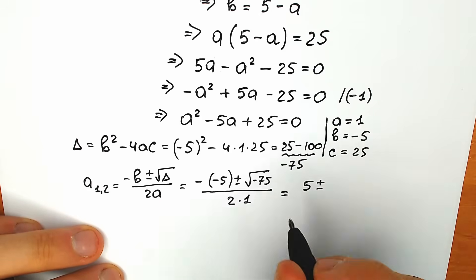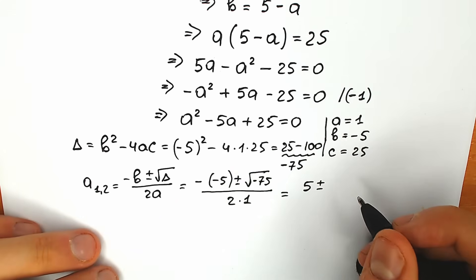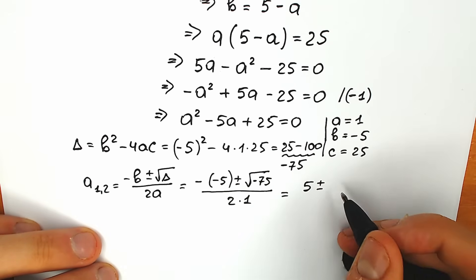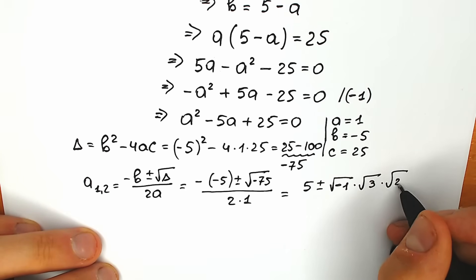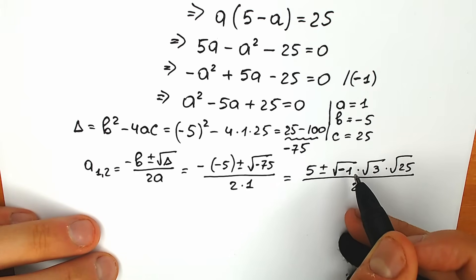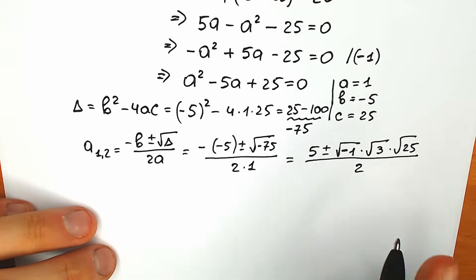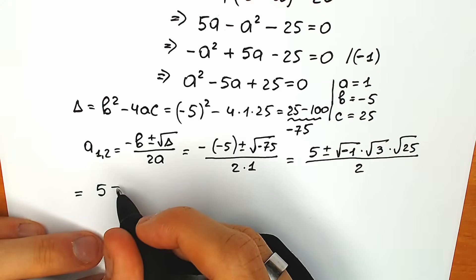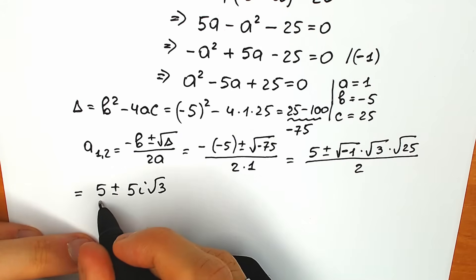So we have 5 plus or minus the square root of minus 75. I suggest you split it. There's one really important property: whenever you have minus 75 you can split it like minus 1 times 3 times 25. Applying the square root property, we get square root of minus 1 times square root of 3 times square root of 25, all over 2. Square root of 25 equals 5 and square root of minus 1 is the imaginary unit i. So we have 5 plus or minus 5i√3, all over 2.